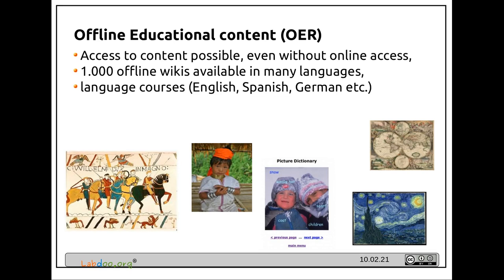We also put offline educational content on each machine. In English it would be about two-thirds of a container full of books and videos; in other languages about half of that. By doing so the computer can be used without any internet connection — you will have Wikipedia, Wikibooks, educational content for schools, and language courses, all stored locally on each computer.